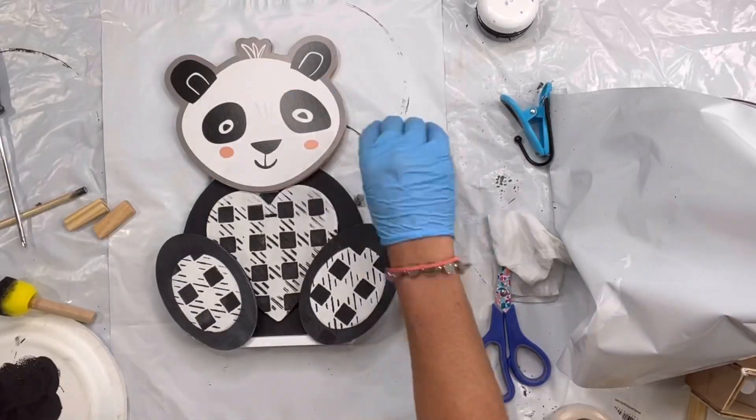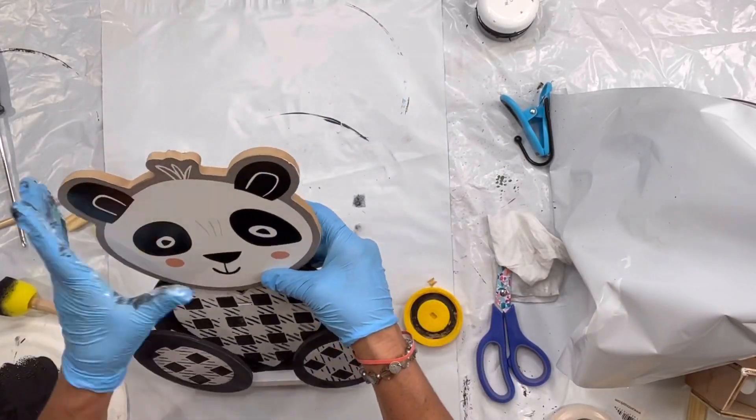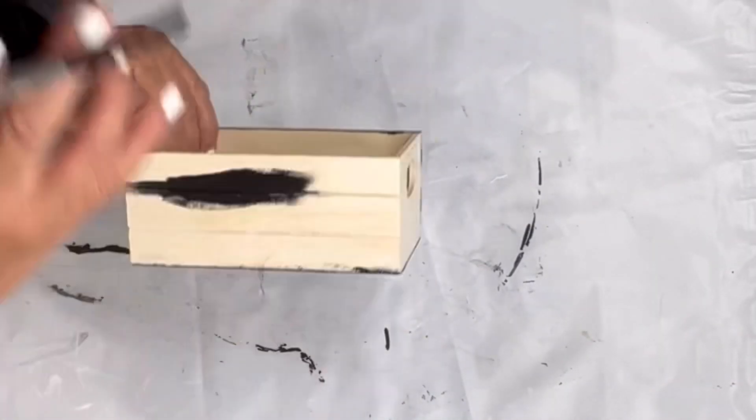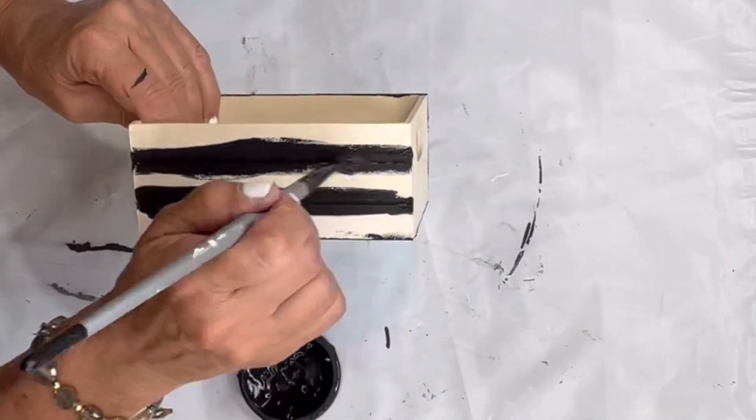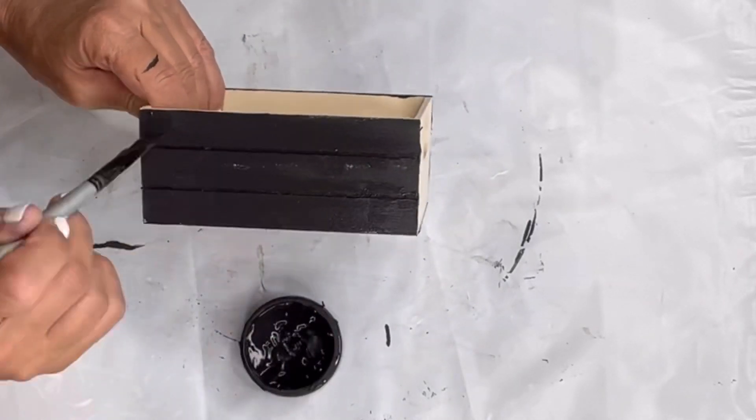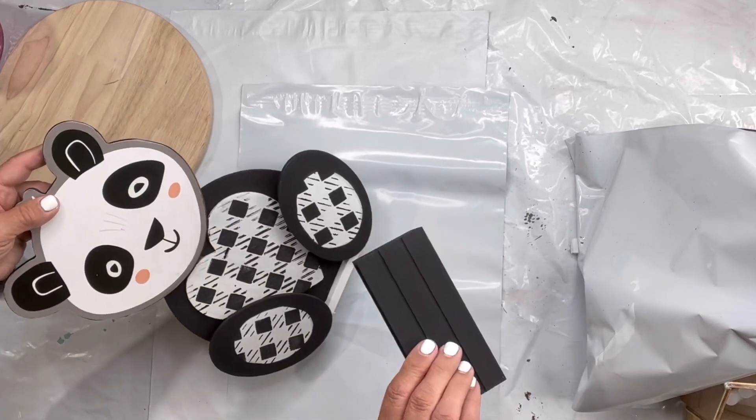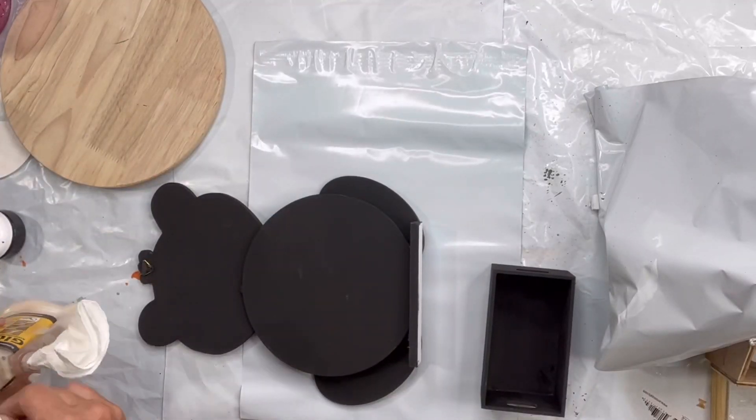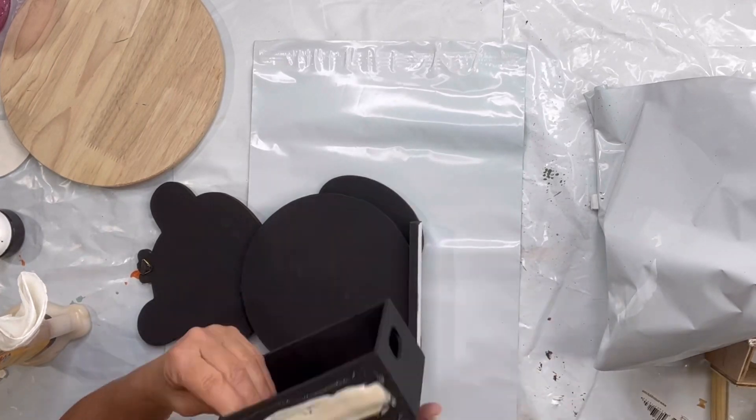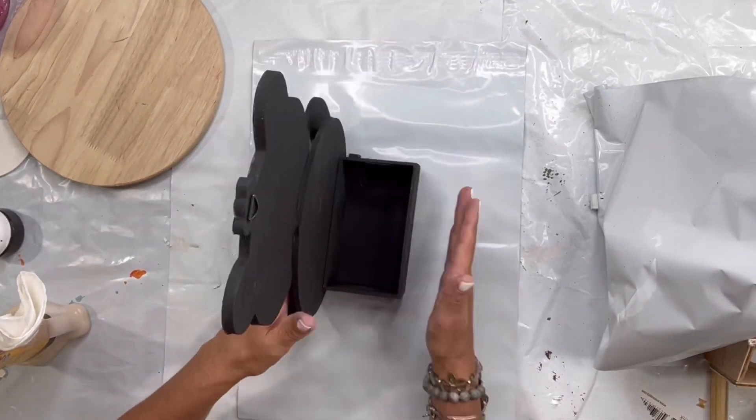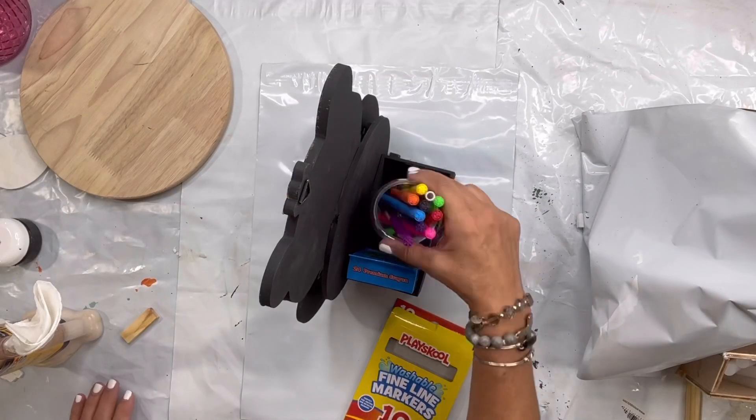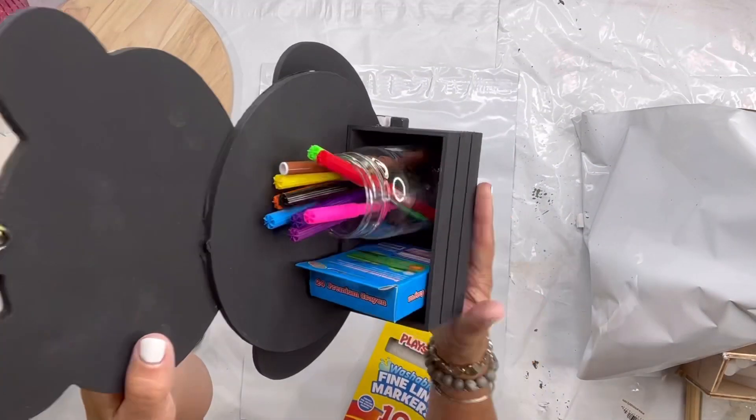I'm going to glue it to the back side of my little panda using Elmer's wood glue and a little bit of hot glue just for that instant hold while the glue dries. Then I'm just going to put some crayons and markers in the back of my panda.